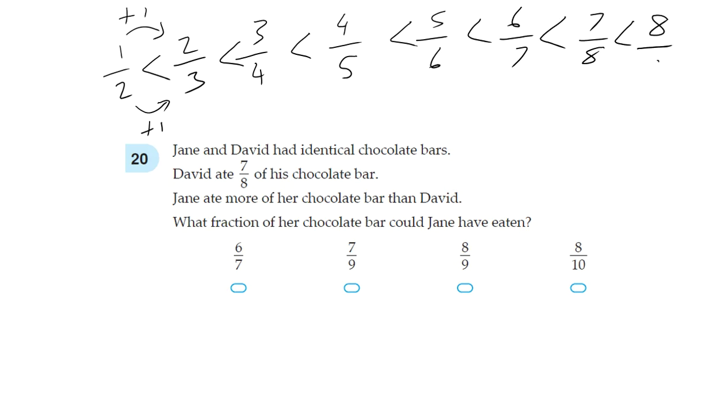Even if you convert these into percentages, you'll figure out that it works the same way. So Jane ate more than 7 eighths. So only this can fulfill that. Just be careful with this one.